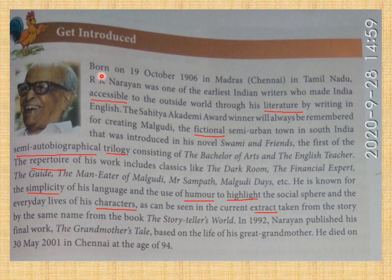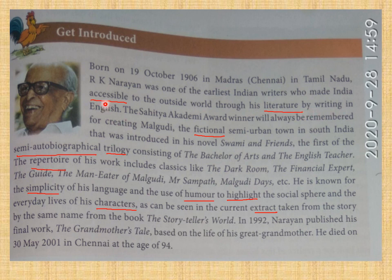Born on 19 October 1906 in Madras, Chennai, in Tamil Nadu, R.K. Narayan was one of the earliest Indian writers who made India accessible to the outside world through his literature by writing in English.